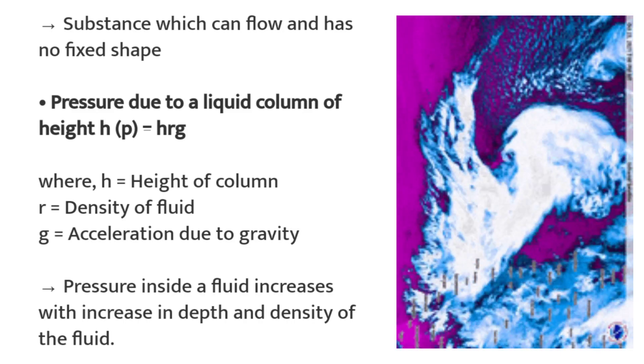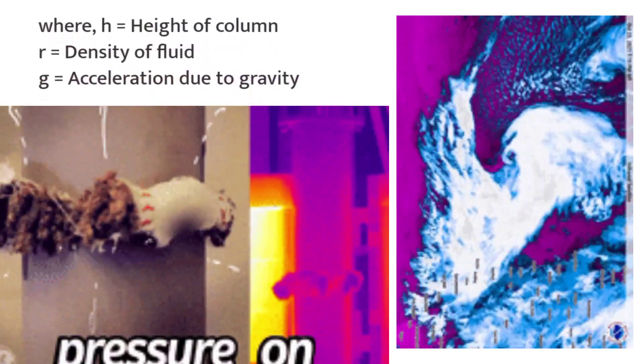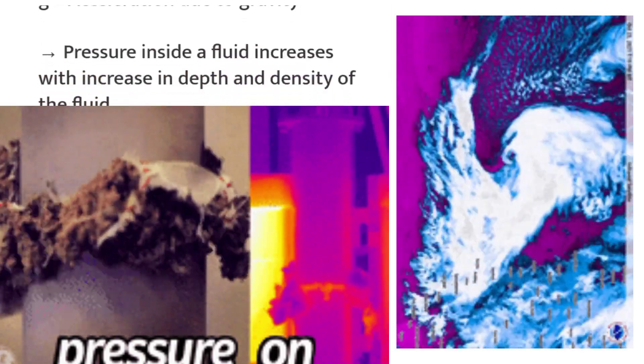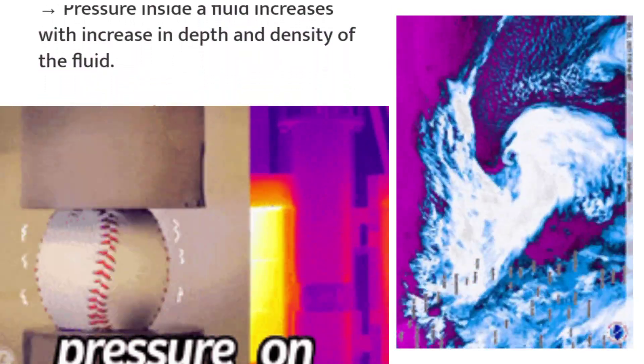Pressure due to a liquid column of height h, where h is height of column, ρ is density of fluid, and g is acceleration due to gravity. Pressure inside a fluid increases with depth and density of the fluid.